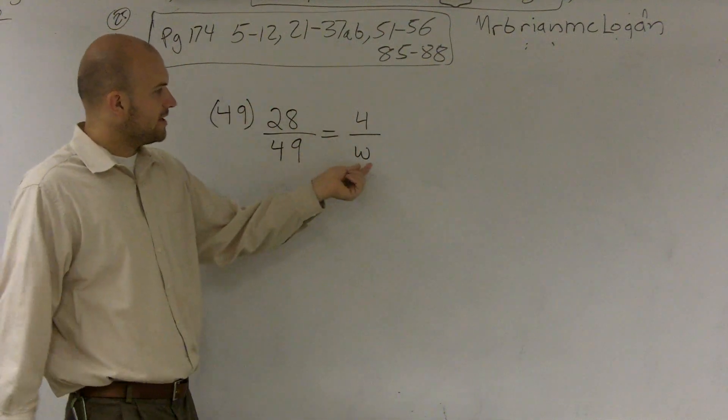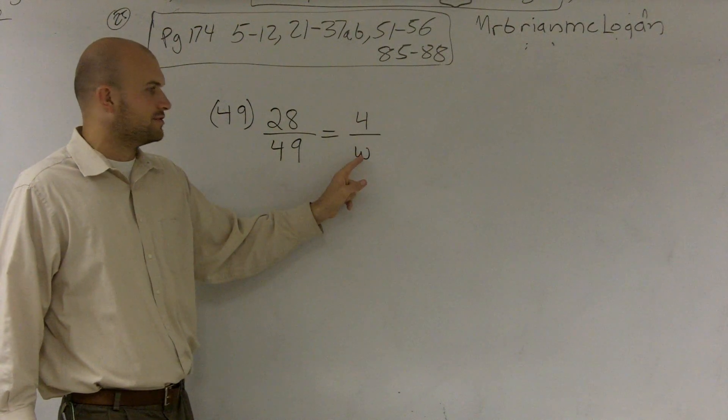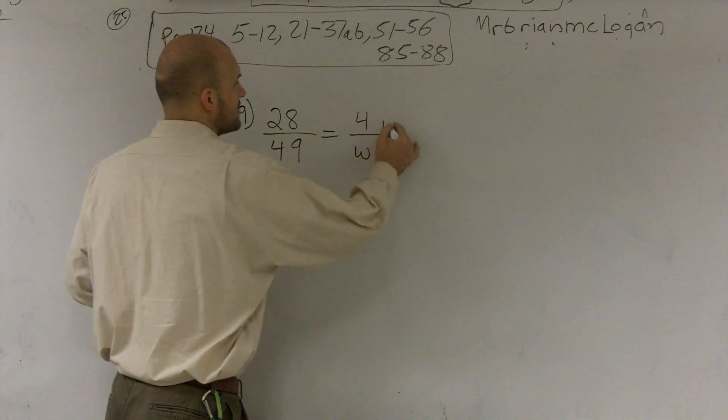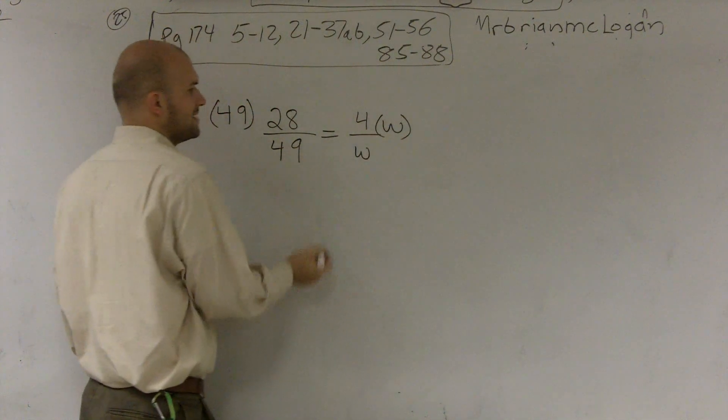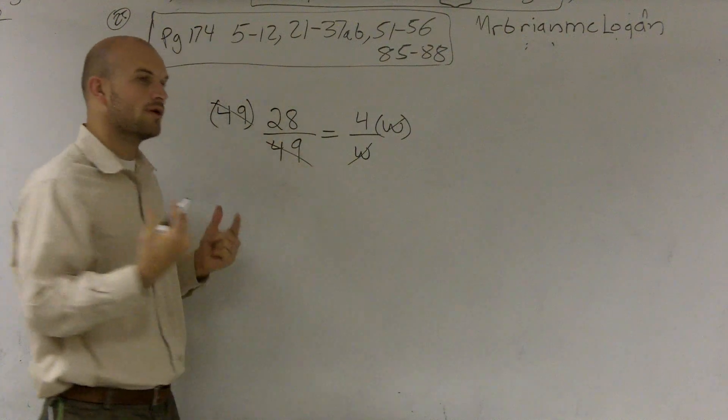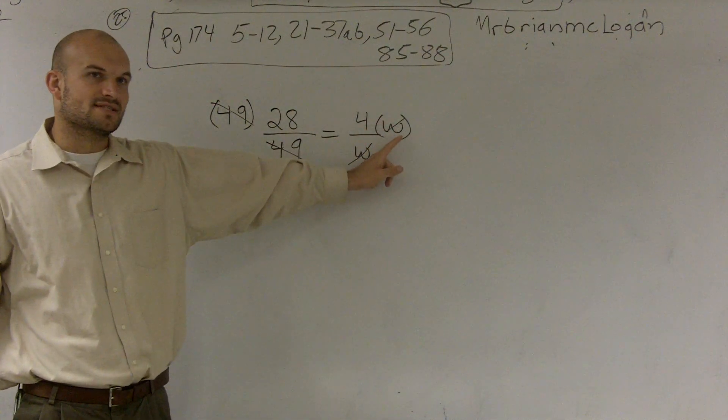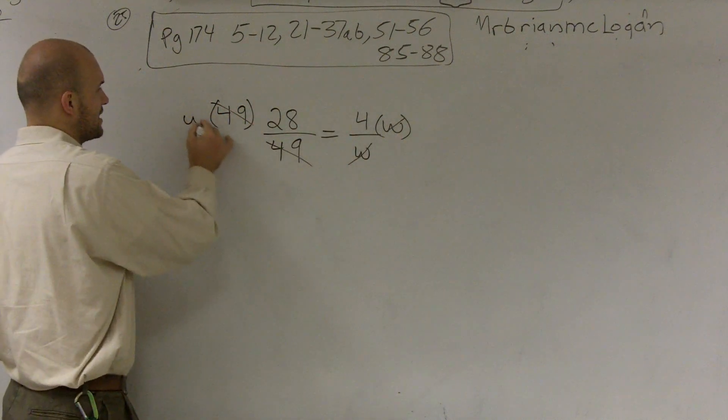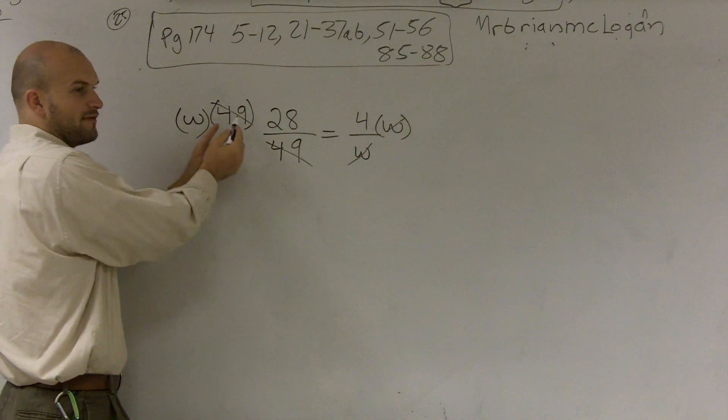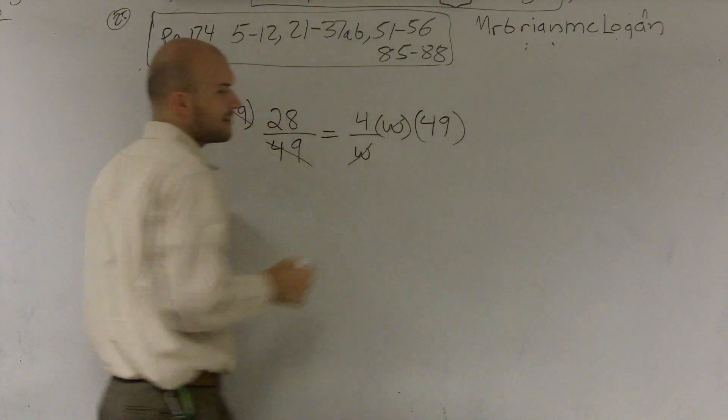Then, if I want to get rid of dividing by w, I have to do what? Multiply. So I'm going to multiply by w. And the exact same thing. These are going to cancel out. But one important part we have to remember is whenever I multiply on one side, I also have to multiply on the other side. And if I multiply 49 on the left side, I also have to multiply 49 on the right side.